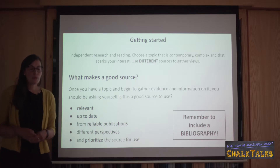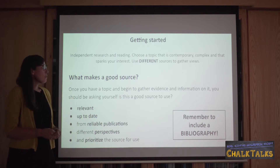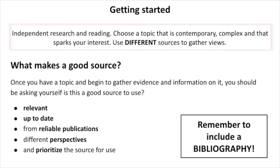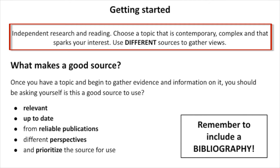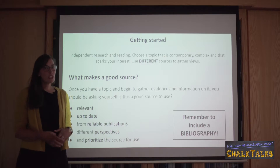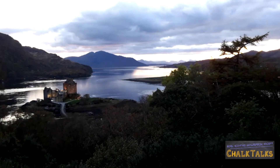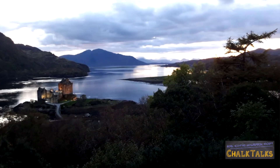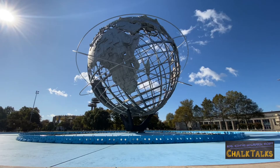So it's worth exploring how do you get started. First of all, this is about independent reading and research. Choose a topic that is contemporary — that means up-to-date, something that is current — a topic that is complex, meaning it is a genuine geographical issue, and something that sparks your interest. Use different sources to gather views. The topic that you choose can be from anywhere in the world: it could be a local topic, a national topic of Scottish interest, or an international topic.